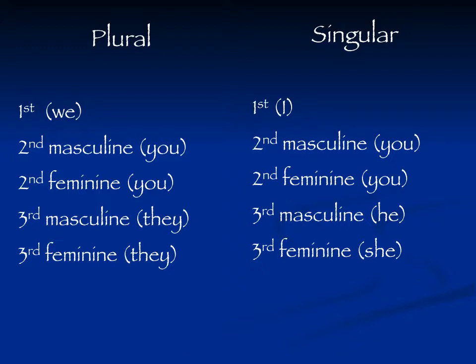Previously in the participle — the present tense — there are only four forms. That is why we start with that, because it is the easiest to grasp. The four forms are: masculine singular, feminine singular, masculine plural, and feminine plural. We have gone over all those endings and the different prefixes they take in the different binyanim. But there are only four forms in the participle.